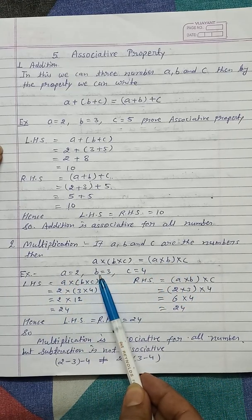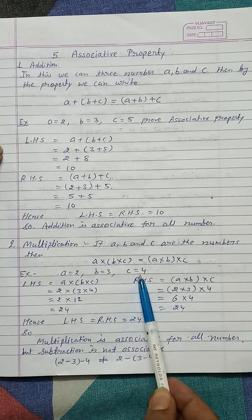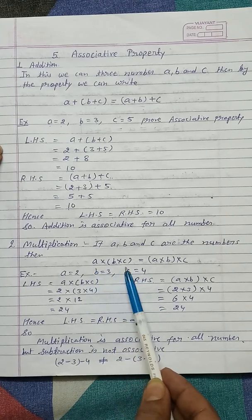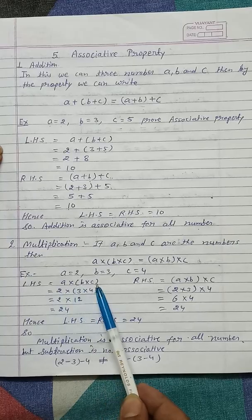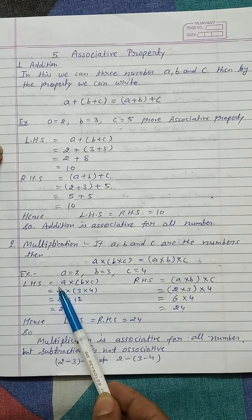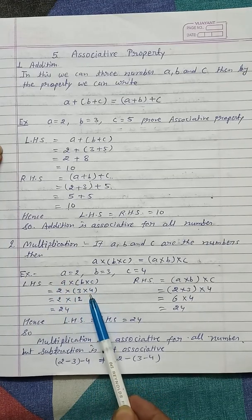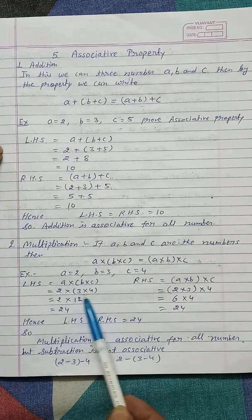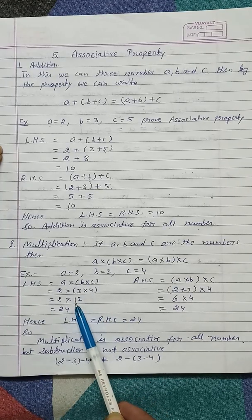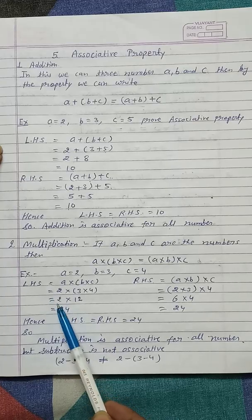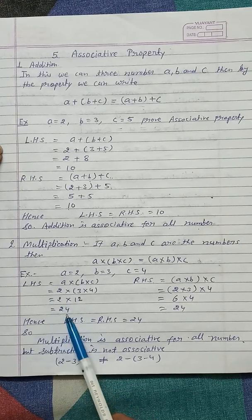A equals 2, B equals 3 and C equals 4. Now first take LHS: A into (B into C). Put the value of A, B, C here: 2, 3 and 4. Now first solve this bracket. 3 into 4 equals 12. Then it is multiplied by 2. So the final answer is 24.